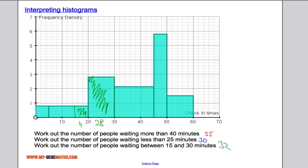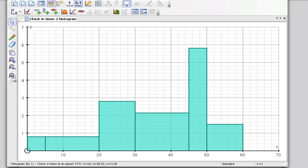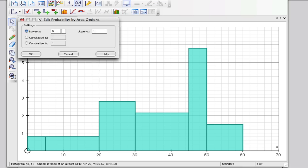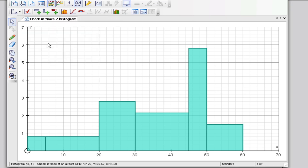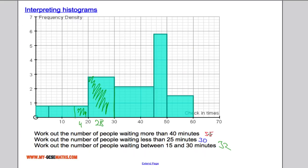Now I just want to confirm these answers with you and show you using Autograph. So let's take a look. First question was the people more than 40 minutes. So let's have a look. If I put in 40 here, for when it's greater than 40, we can see here down the bottom that the frequency is 54.67. We had 55 so we rounded it correctly. That's absolutely spot on.